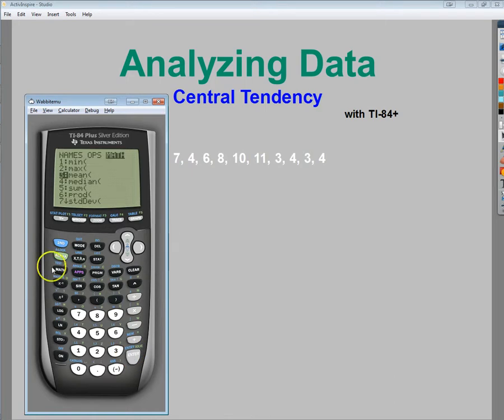Now, to find the mode, and I think I already found the median. Let me make sure. Yeah, I did. Okay. To find the mode, in older versions, like the TI-73+, which is the middle school version, there's actually a mode button that'll do it for you. In the TI-84+, they assume that you can count.